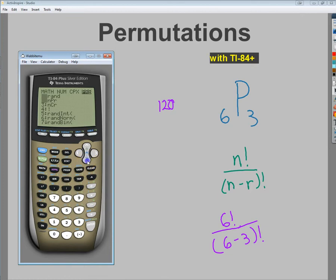I forgot to mention that before. Go down to where permutations live. And then afterwards, you just type in your r value, like how many you're concerned about organizing. And then there it is, 120. So that's permutations with the TI-84+. So if you have one, there it is.